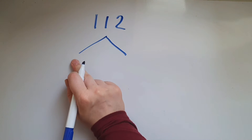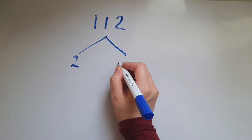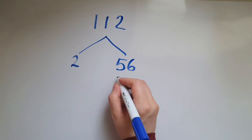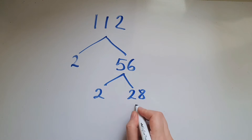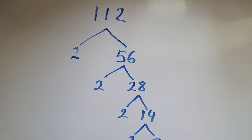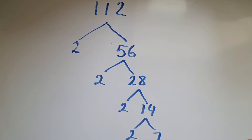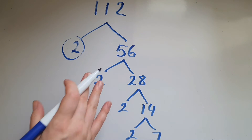We look at 2 first — does 2 fit into 112? It did, giving us 56. Then 2 fits into 56 to give 28, then 2 times 14, and continuing with 14: 2 times 7. If you look at all these branches, the ends of these branches are all prime numbers — that's what we're doing, prime factorization. It's good practice to circle the prime number when you reach it, to show that you're finished with it.